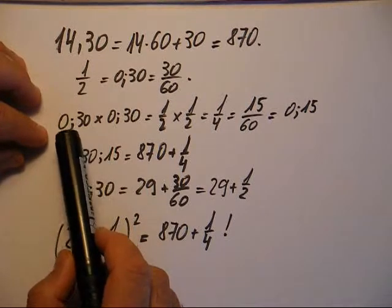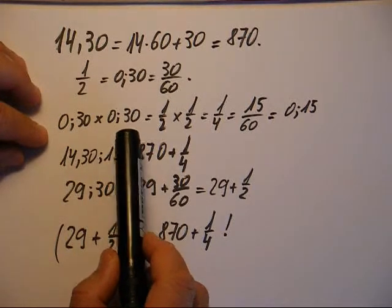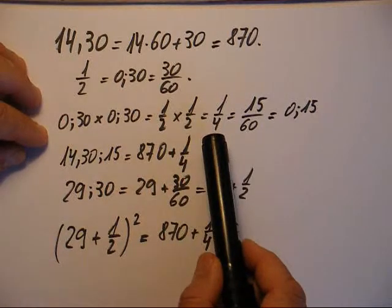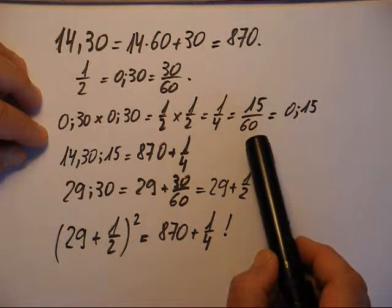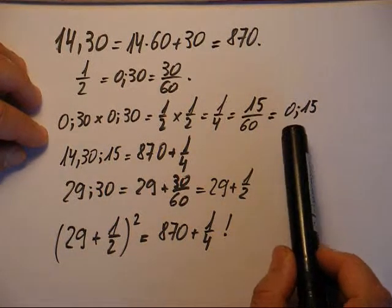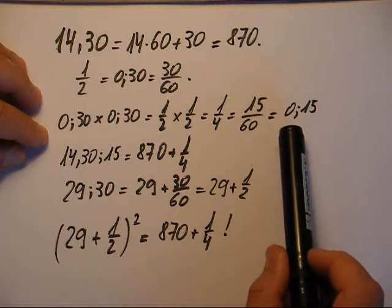Puis la multiplication 0,30 fois 0,30: 1 demi fois 1 demi ça fait 1 quart. Autrement dit 15 sur 60, ce qui donne bien sûr en écriture babylonienne 0,15.